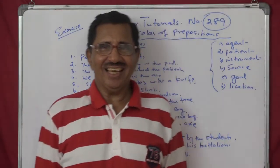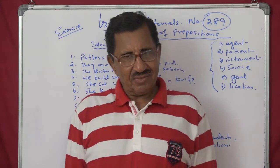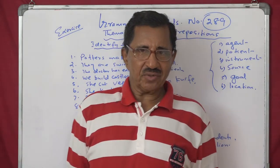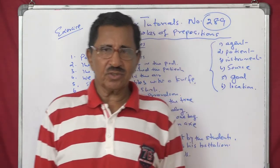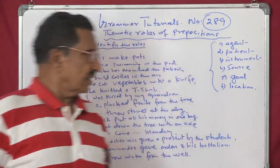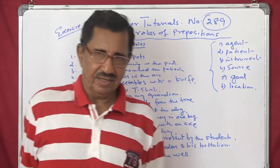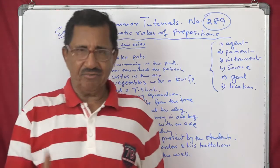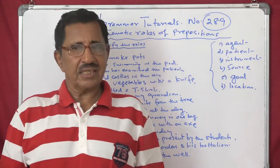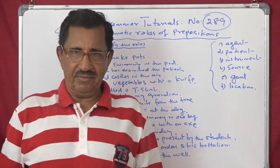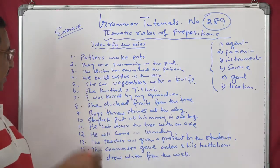Hi friends, our grammar tutorial today — we are in the last class. We saw different thematic rules. Thematic rule means the meaning of prepositions. We saw agents, patients, instruments, sources, goals, and locations. Now today you have to identify some sentences. As usual, we have a set of 15 sentences and we will identify them — it is an exercise for us and we will do it together.